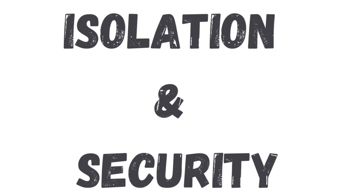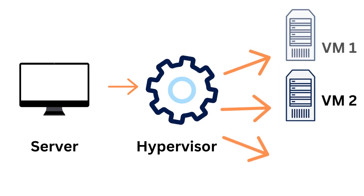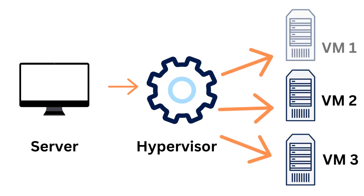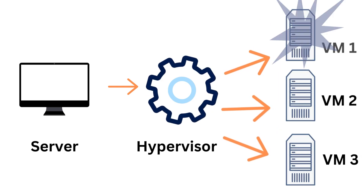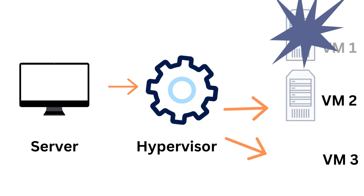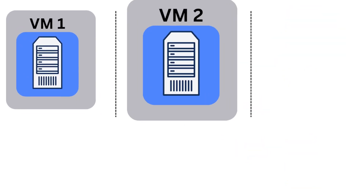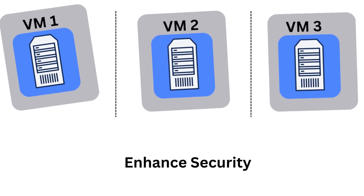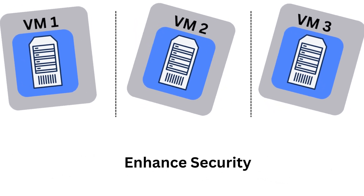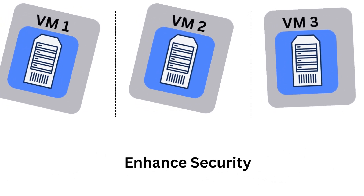Third, Isolation and Security: Each VM runs independently of the others, meaning if one VM crashes, it won't affect the others. This isolation also enhances security, as any malicious activity in one VM is contained within that VM.